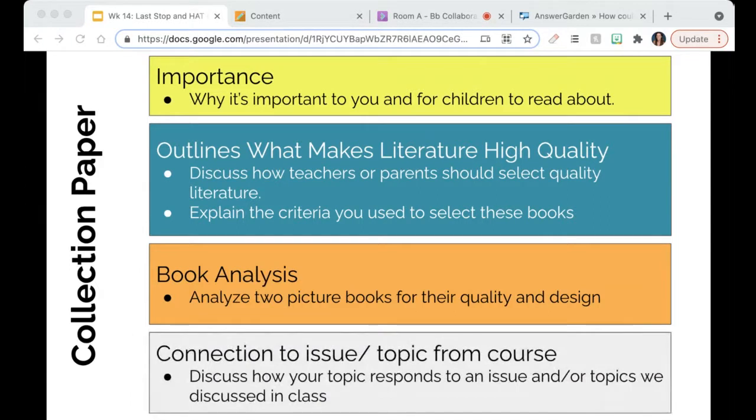The last section of your paper should really be telling me how your collection connects to a course topic or issue we've discussed. We've discussed a lot of issues in children's literature. We've talked about the issue of challenging texts, not that they're hard to read for students, but that they have kind of taboo or emotionally troubling topics. We've talked about representation, diversity, stereotypes, when we talked about Adichie's notion of a single story. Does your collection connect to any of those things?